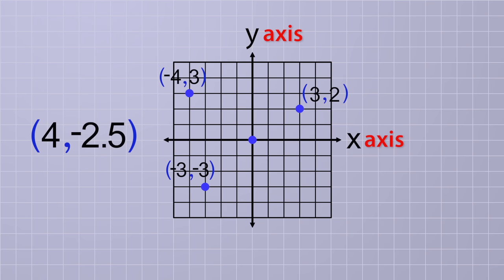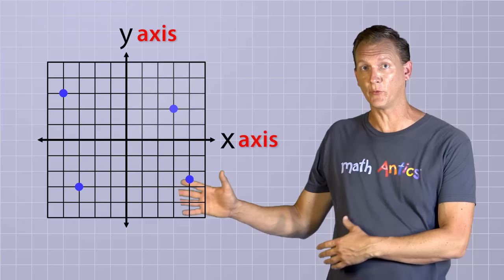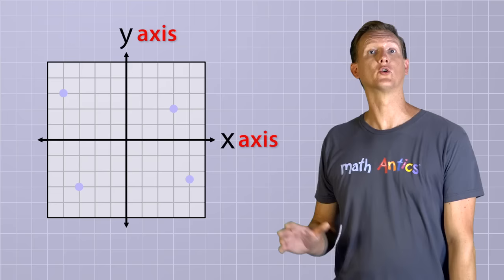And last, let's plot the coordinates (4, -2.5). Starting at (0, 0), we move the point 4 units in the positive x direction and then 2.5 units in the negative y direction. Okay, so we've plotted four ordered pairs the easy way.